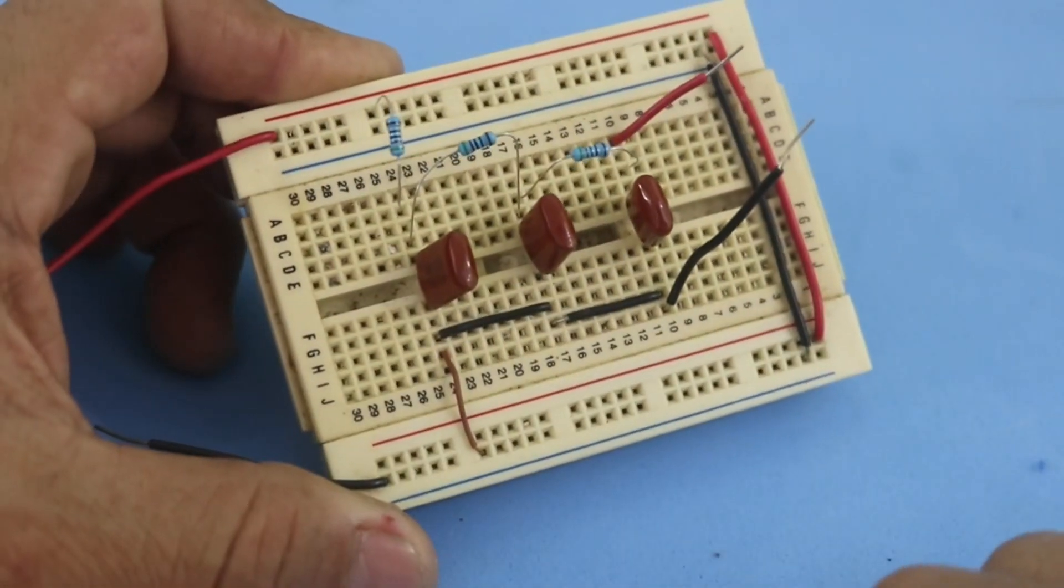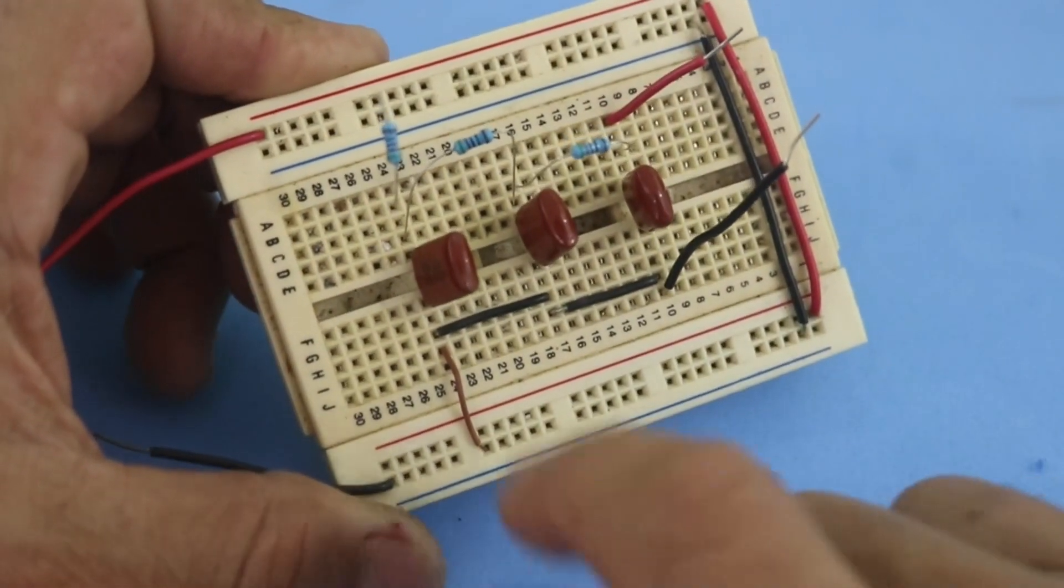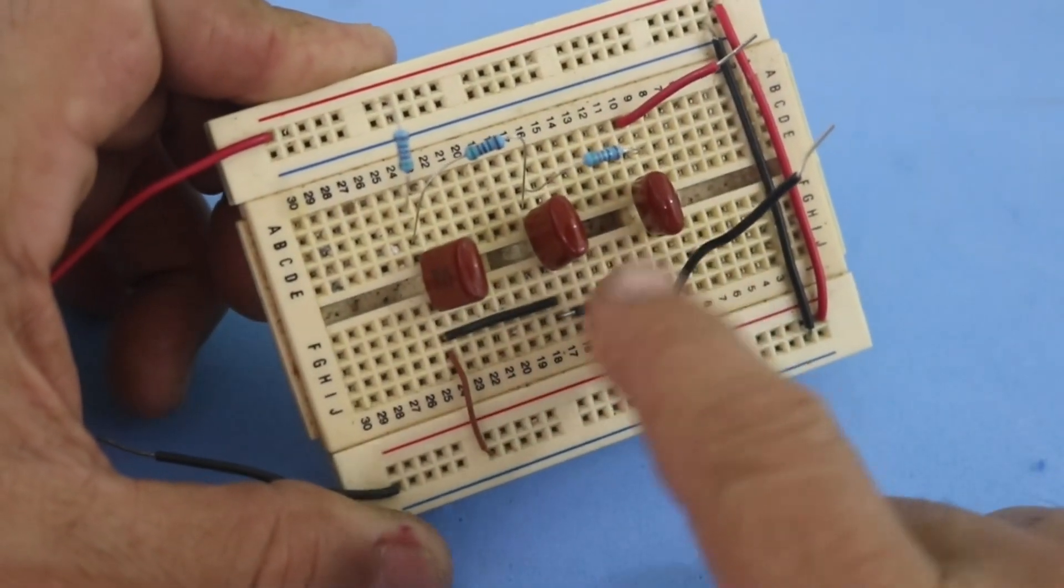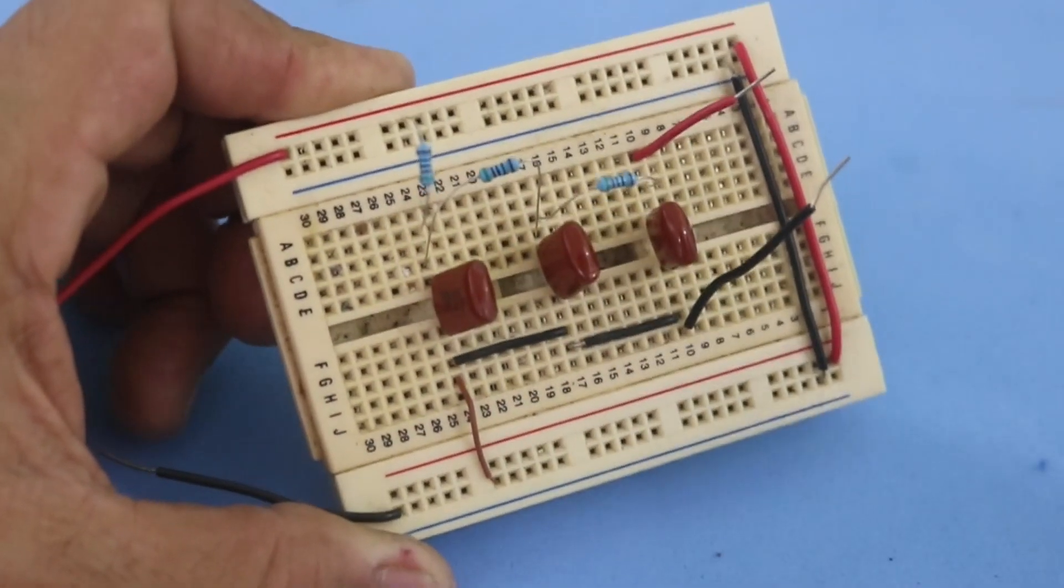As you can see it has only six passive components, three capacitors and three resistors.